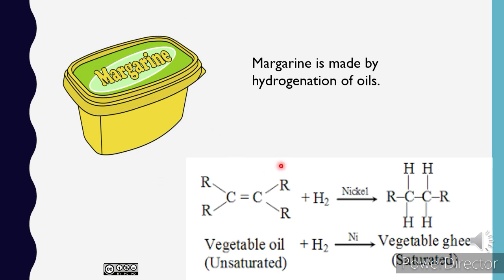Hydrogenation is addition of molecular hydrogen to an unsaturated compound. Here is a vegetable oil which contains lot of unsaturation, that is either double bond or triple bond. And the product we get here is vegetable ghee which is margarine.